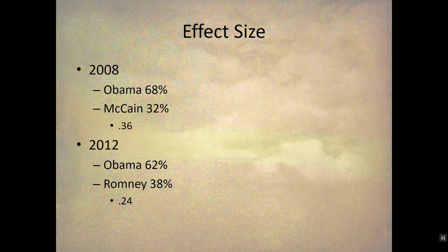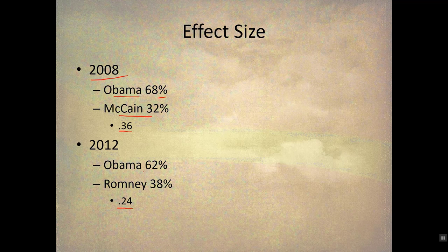How can you intuitively understand effect size? Back in 2008 in the presidential election, Barack Obama won 68% of the popular vote and John McCain won 32% — that's a 36% difference, and that's the effect size. Back in 2012, there was a 24% effect size. So we can compare the size of Obama's wins in 2008 and 2012 — Obama had a much larger win over McCain than he did over Romney. This is an intuitive way to think about effect sizes: how big a difference, and we can use them to compare across different situations.